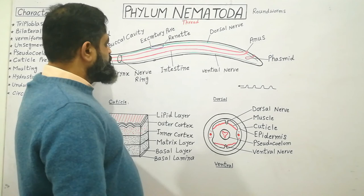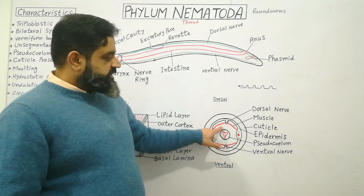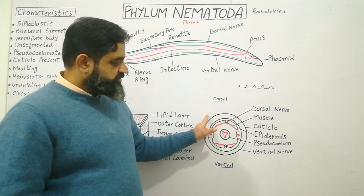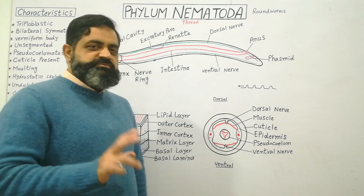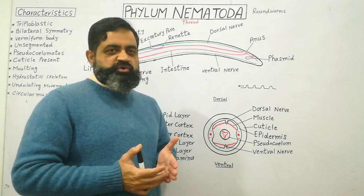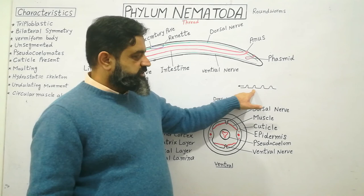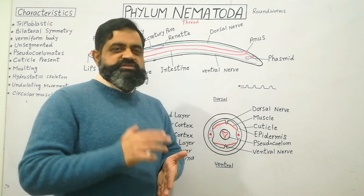These animals do not contain circular muscles. The four longitudinal muscle bands are present on the dorsolateral and ventrolateral sides of the body. When these muscles contract, the body bends and produces a movement known as undulating movement. As the bending moves backward, the animal moves forward — this undulating movement is a special characteristic of nematodes.